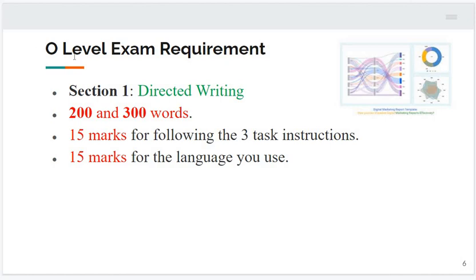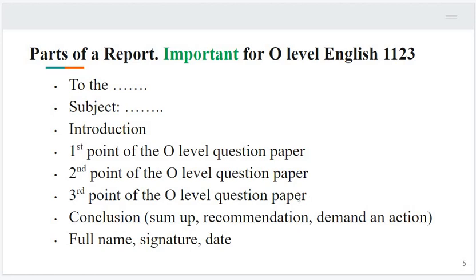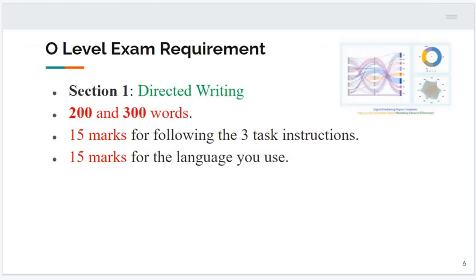O-level exam requirements: Section one is for directed writing. It requires 200 or 300 words and 15 marks for following the three task instructions — 15 marks are allocated to those who address all three points. Another 15 marks are for the language you use: correct spellings, correct sentence structure, variety of vocabulary, logic, coherence, cohesion, transitional words, and appropriate use of idioms.